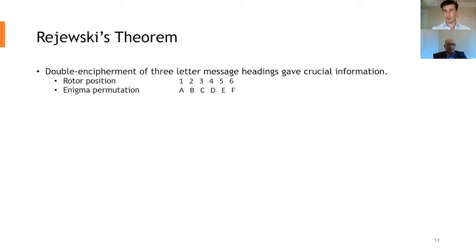So if we can dive into Rejewski's theorem now. So this double encipherment of the three-letter message headings gave some crucial information away. So if we take our rotor position, so when you set up the enigma machine as per the daily key, you have rotor position one, and that's essentially what we're going to deem enigma permutation A. So that's, as Tim was showing earlier, the letters are scrambled through all the rotors, reflect, etc. And it's essentially a substitution cipher. When you press a letter, the rotors move to a different position, you get a different permutation, a different substitution cipher. So that's why we've got A, B, C, D, etc.